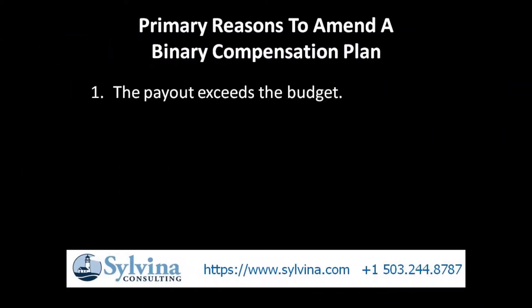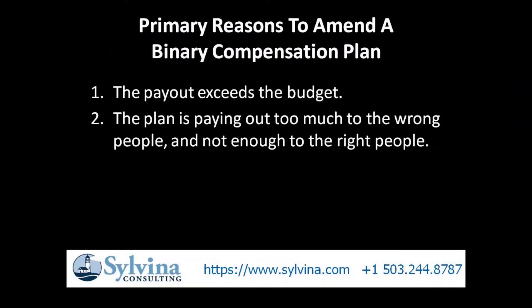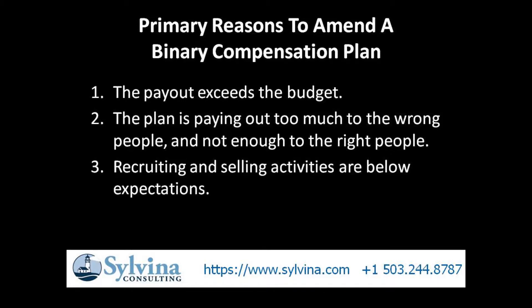While steps can be taken to slow the payout down, still it is common for direct selling companies with binary compensation plans to have the need to amend their plans later for three primary reasons. One, the payout exceeds the budget. Two, the plan is paying out too much to the wrong people and not enough to the right people. Three, recruiting and selling activities are below expectations.